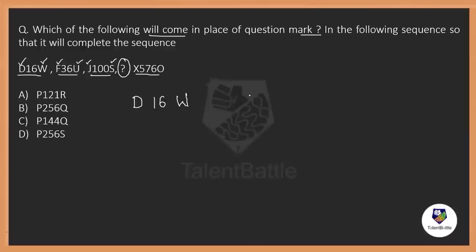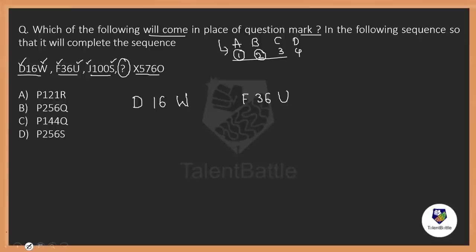Always remember something called alphabetical numbering. If you haven't learned it, first remember alphabetical numbering. Alphabetical numbering is nothing but A is 1, B is 2 — as per the place they appear, we give the numbers. C is 3, D is 4. If you know these numbers, it's very easy to solve letter series based equations.